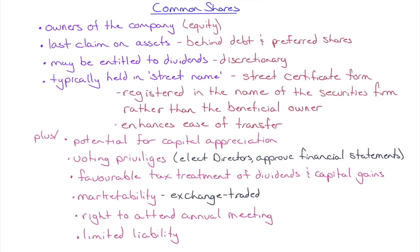Let's talk about common shares and their defining features. If you own common stock, you are one of the owners of the company — you have equity. You have the last claim on assets, behind all forms of debt and preferred shares, so you have what's called a residual claim on assets. You may be entitled to dividends, but they're discretionary.